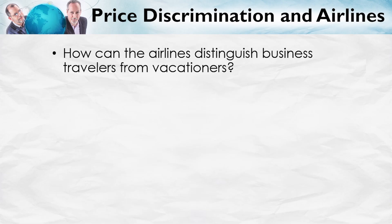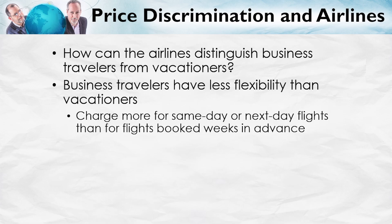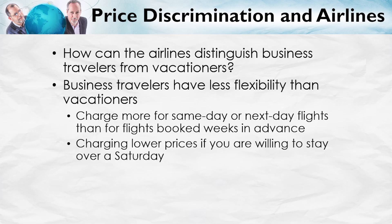How can an airline distinguish business travelers from vacationers? Business travelers often have less flexibility — they might need to make an important meeting on short notice. So airlines typically charge more if you want to fly that day or the next day than if you book several weeks or months in advance. People who need a ticket for tomorrow are probably flying to settle a big business deal and won't be deterred by a higher price. People booking weeks ahead have more substitutes — if the price to California is too high, they might take a local vacation or fly another airline to Florida. Similarly, vacationers are more willing to stay over a Saturday night than business travelers, so it's sometimes cheaper to travel with a Saturday stay-over.